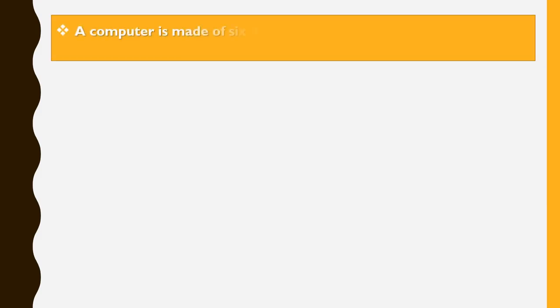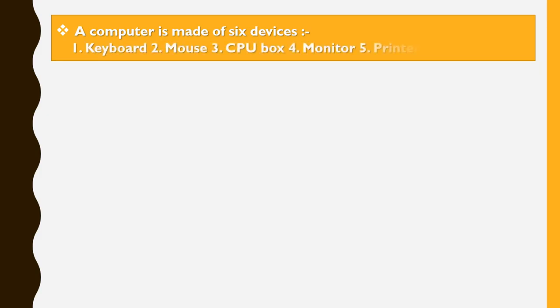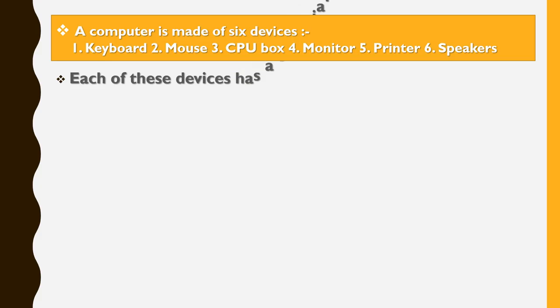Let's study about computer devices. A computer is made up of six devices: keyboard, mouse, CPU box, monitor, printer, and speakers. Each of these devices has a special function to perform.